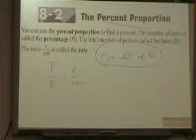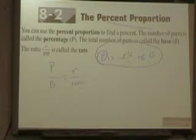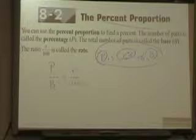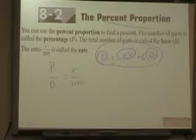P is R percent of B. This is what your problems are going to look like. P is the first number, R is the percentage, and B is the second number. Now, they're only going to give you two of three of these and expect you to find the other one.